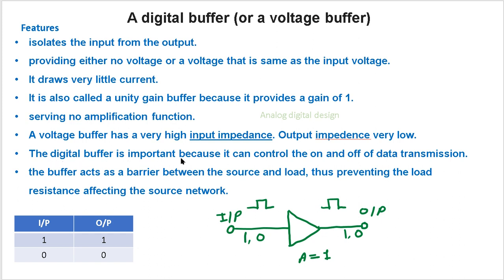A digital buffer is important because it can control the on and off of data transmission. It can control the input and output because it has the control line here. We will study it in the next slide.